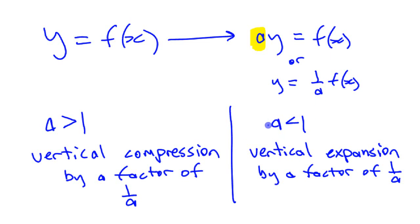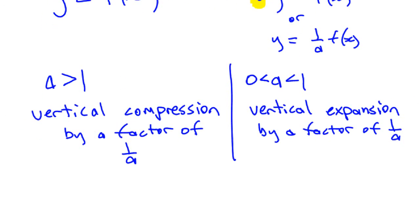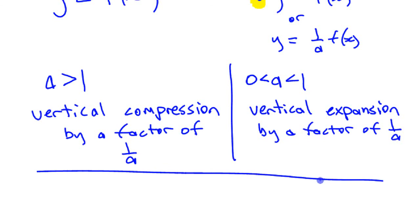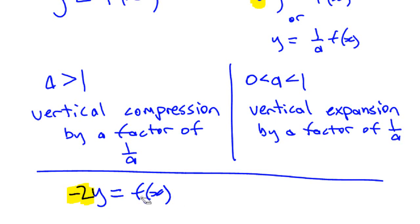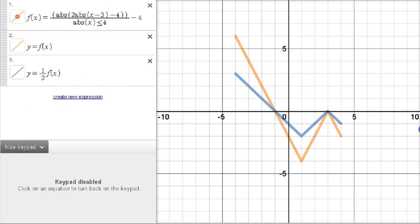We should specify a is greater than zero, because if a is also negative, we're getting into combining transformations, which we'll look at later. For example, −2y = f(x) would be treated as two separate changes: the negative is handled separately from the 2, combining a reflection and a compression.